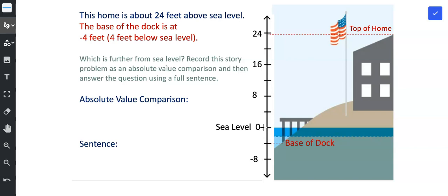I want you to notice that we're going up on this number line by 4. So we're at 4, then 8, then 12, then 16, then 20, then 24. And then as you go below zero, you can see that the base of the dock is at negative 4 feet. And then we're at negative 8 feet and next would be negative 12 feet.